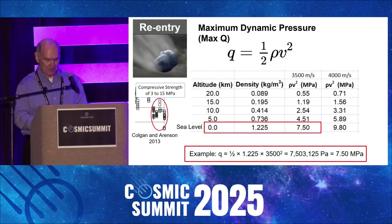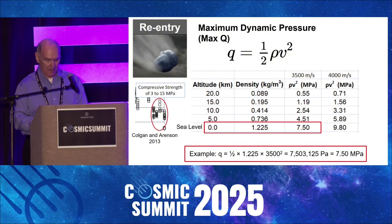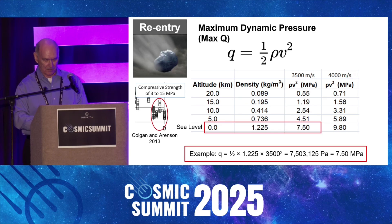This means that ice boulders could have survived reentry through the atmosphere without breaking up. Some weak ice boulders with a compressive strength of 3 megapascals could have fragmented at an altitude of 5 km above the surface during reentry, but at a speed of 3.5 km per second, the pieces would have hit the ground 1.4 seconds after fragmentation.